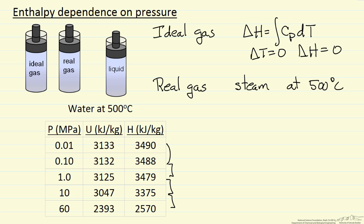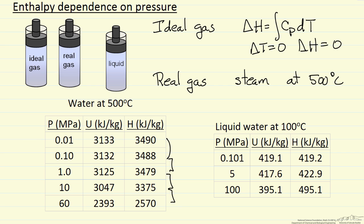So the final case, let's look at liquid, and again I'll pull some data from the steam tables. Here's liquid water. Notice that at one bar pressure, the internal energy and enthalpy are almost identical. We go to 5 megapascals — 50 bar pressure — and we see a very slight increase in the enthalpy.